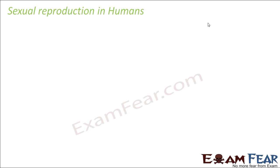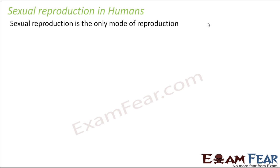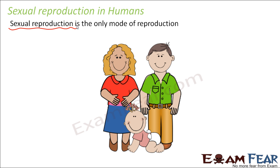In our previous lesson, we spoke about sexual reproduction in human beings — how human beings give birth to new human beings. The only mode of reproduction possible for humans is the sexual mode. For sexual reproduction you need two parents: one male and one female. In asexual reproduction, just one organism can give birth to new organisms, but that mode is not possible in the case of human beings.